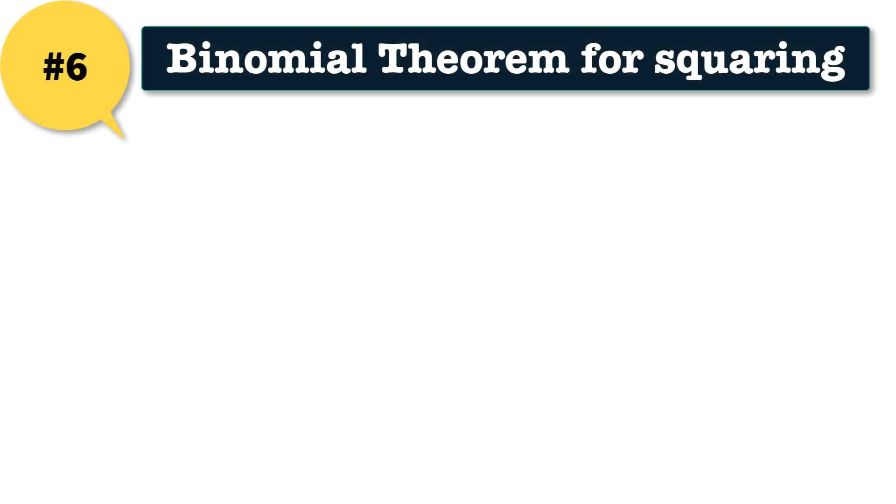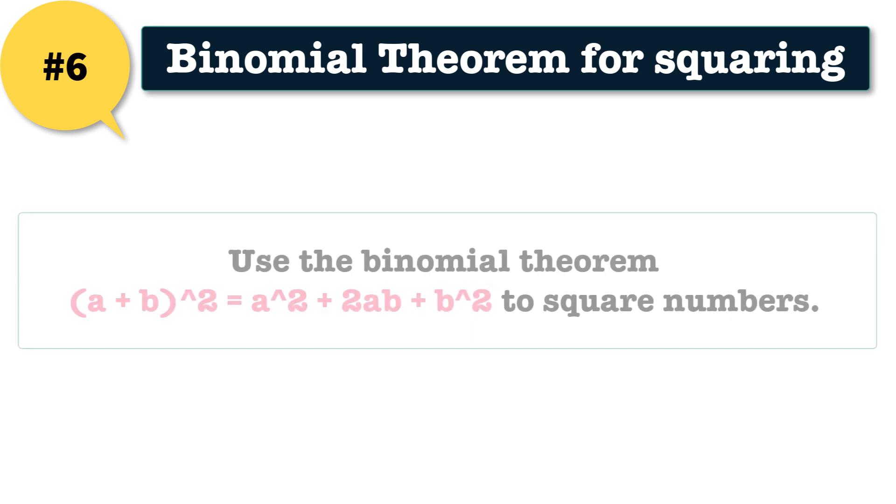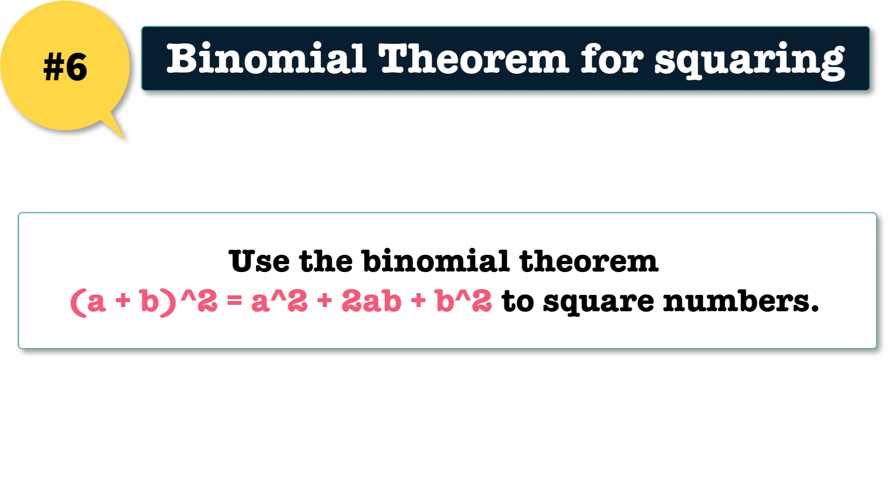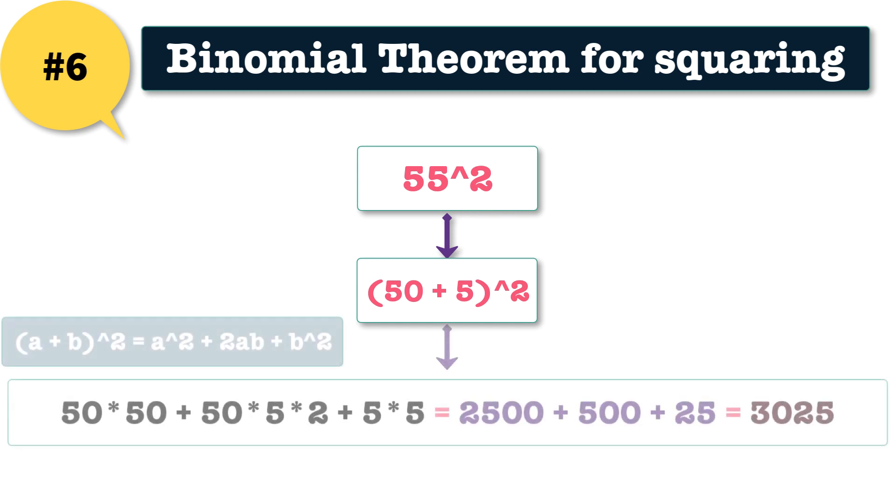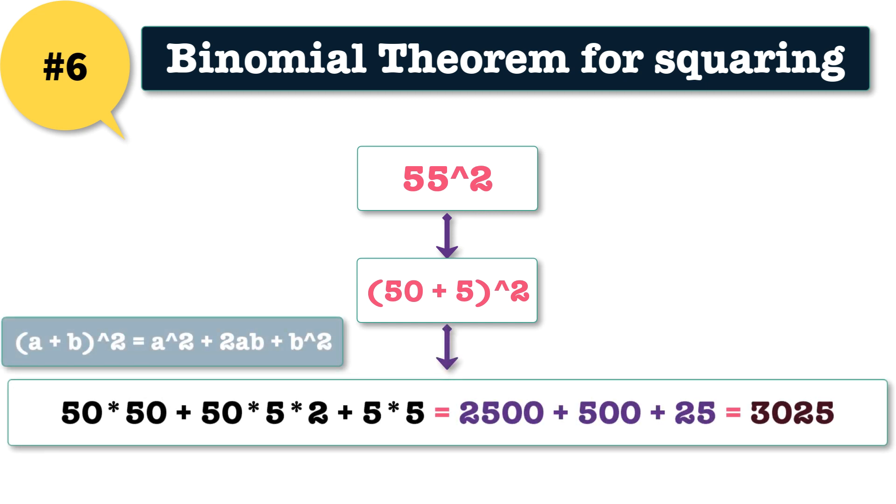Trick 6: binomial theorem for squaring. Use the binomial theorem (a plus b) whole square which equals a square plus 2ab plus b square to square numbers. For example, 55 square could be (50 plus 5) whole square. This means that 50 times 50 plus 50 times 5 times 2 plus 5 times 5, which equals 2500 plus 500 plus 25 equals 3025.